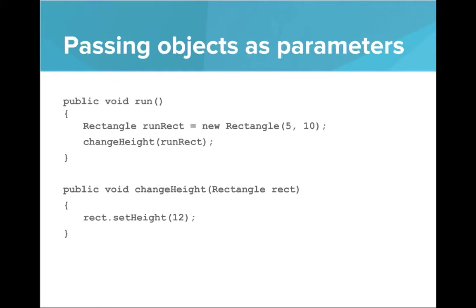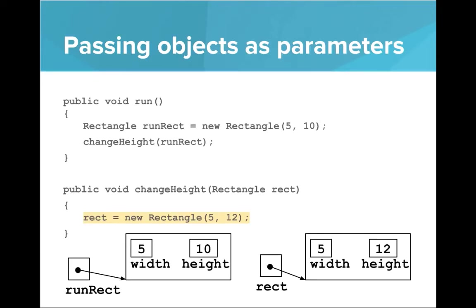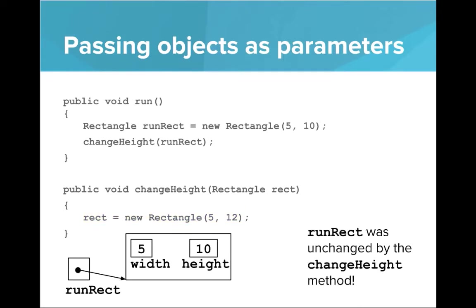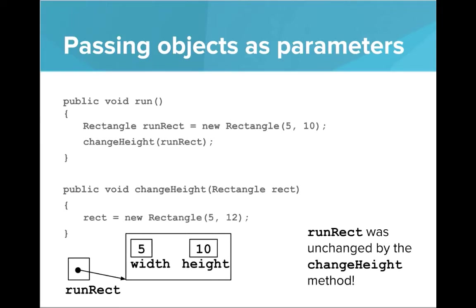What if instead of calling a method on the parameter rect, we set it to point to a brand new location? Inside run, runRect is pointing to a new rectangle with width 5 and height 10. We call the method, copy over the pointer into rect — so both point to the same location. Then rect is pointed to a new rectangle with width 5 and height 12. This will not change runRect. Rect now points to a brand new spot, and as soon as the method ends, rect goes away, leaving runRect unchanged. So: if we call a method on an object parameter, that will modify the original object. If we set it to point to a new location, the original object will be left unchanged.